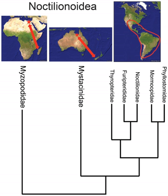Iguanid lizards are distributed throughout the Americas, on Madagascar, and on Fiji and Tonga in the western South Pacific. The Malagasy forms are basal, with an estimated divergence date from the others of approximately 162 million years, not long before the time of Madagascar's separation from Africa. This suggests that iguanids once had a widespread Gondwanan distribution. After the Malagasy and New World representatives were isolated by vicariance, the remaining Gondwanan iguanids became extinct through competition with other Old World lizard groups. In contrast, western Pacific iguanids are nested deeply within American iguanids, having apparently colonized their isolated range after a remarkable 10,000 km rafting event.